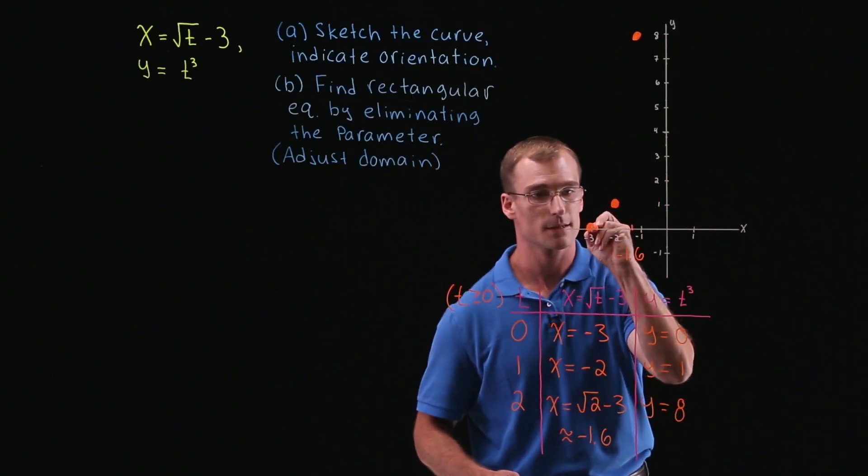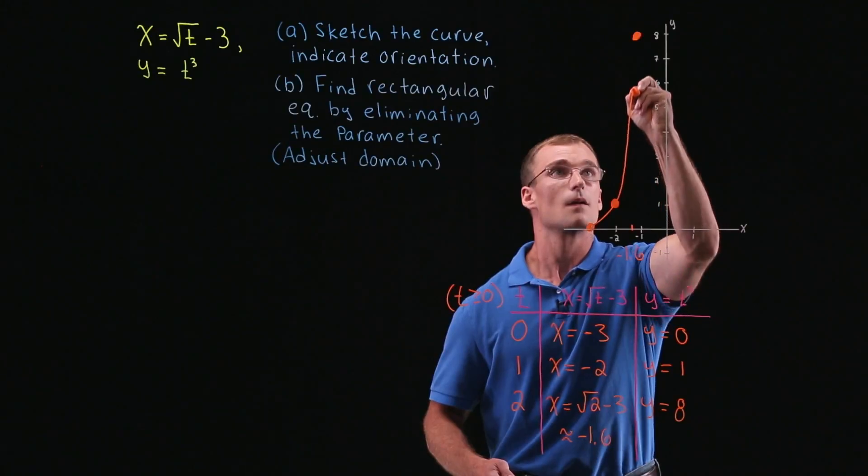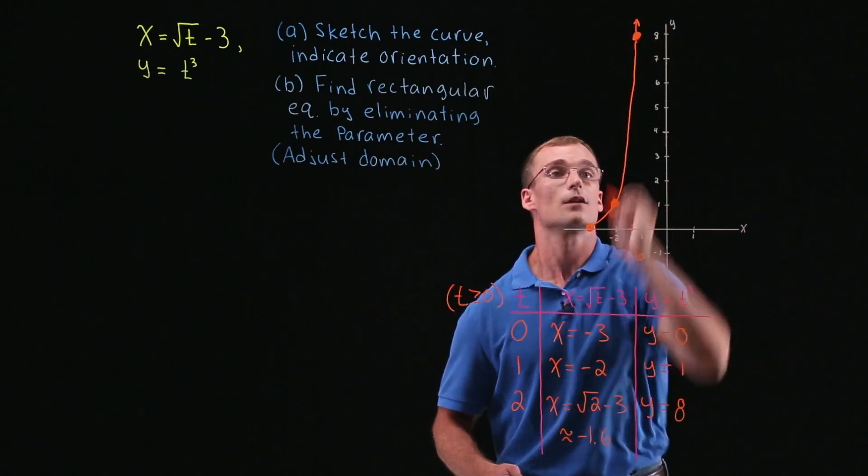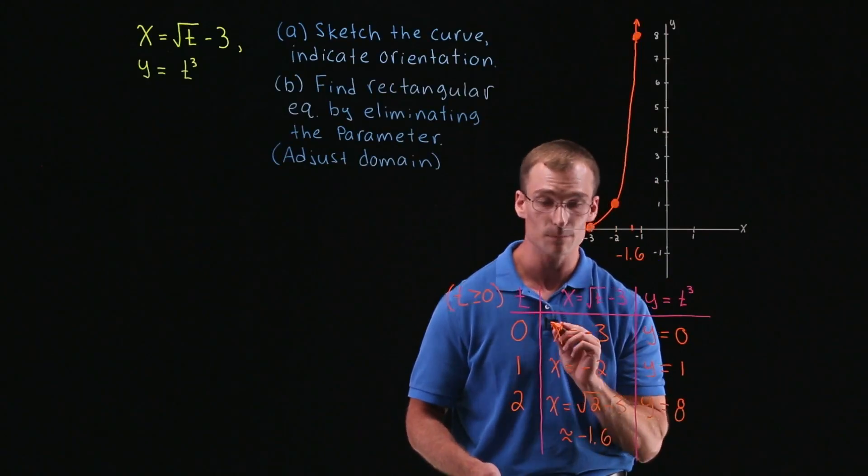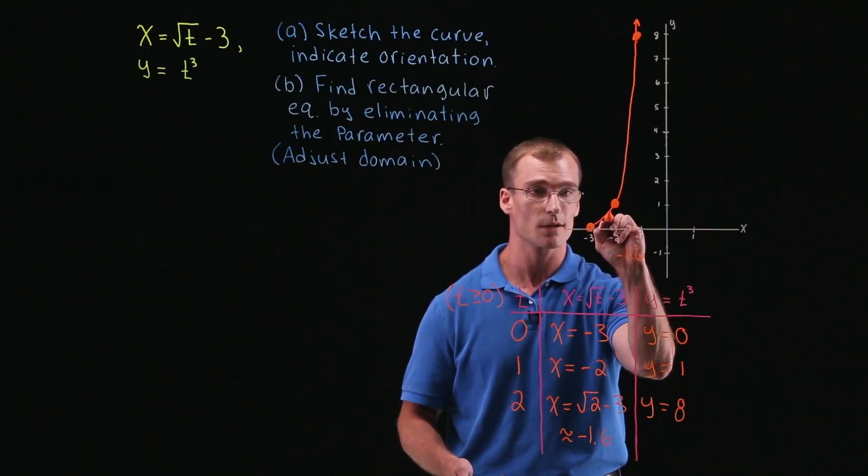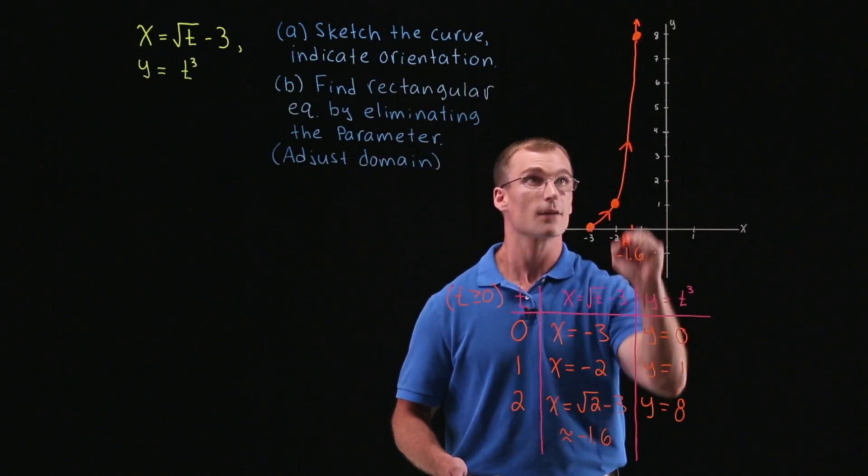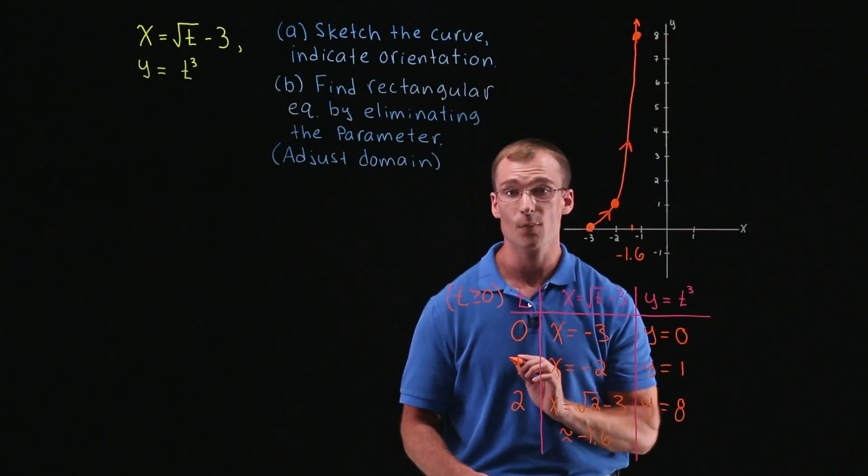OK, and then connecting these. There we go. And we know we're going to continue on somehow. So there's the sketch of our graph and the orientation. So it went from the point negative 3, 0 to the point negative 2, 1 as t increased. And from negative 2, 1 to negative 1.6, 8. So there's the orientation of our curve. So that's part a.